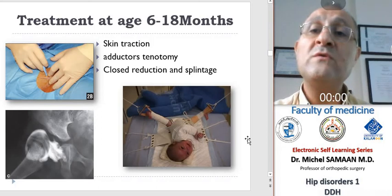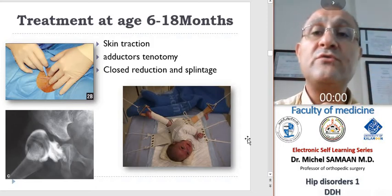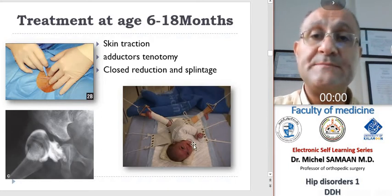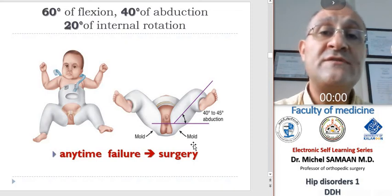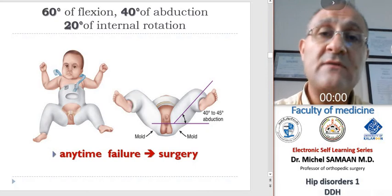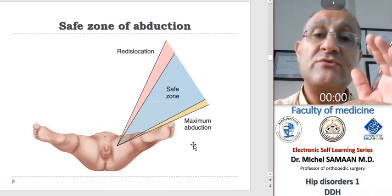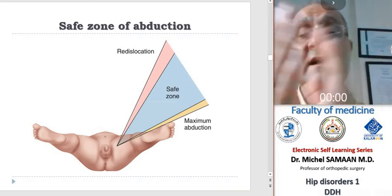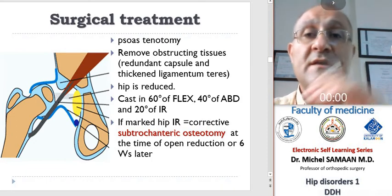Examples of splints used include the Von Rosen splint, which is a shed-shaped malleable splint, easy to put on and remove. The most widely accepted splint is the Pavlik harness, which gives the child more freedom while maintaining the hips at 90 to 110 degrees of flexion with limited abduction. We do radiological or echographic control to ensure good reduction and continue treatment for at least 3 months or until the age of 6 months. Between 6 and 18 months, we perform closed reduction under general anesthesia with adductor tenotomy, and it is preferable to do an arthrogram to confirm concentric reduction. Reduction should be gentle and may be preceded by gradual traction to both legs.